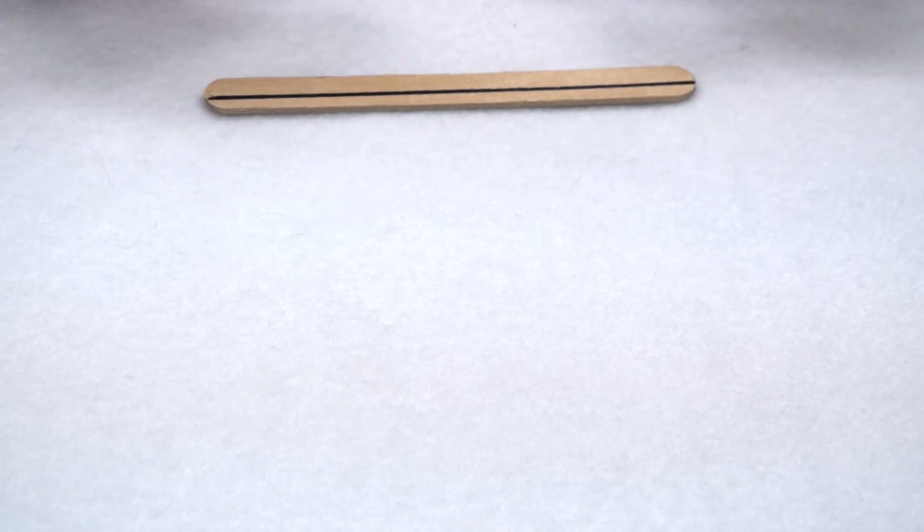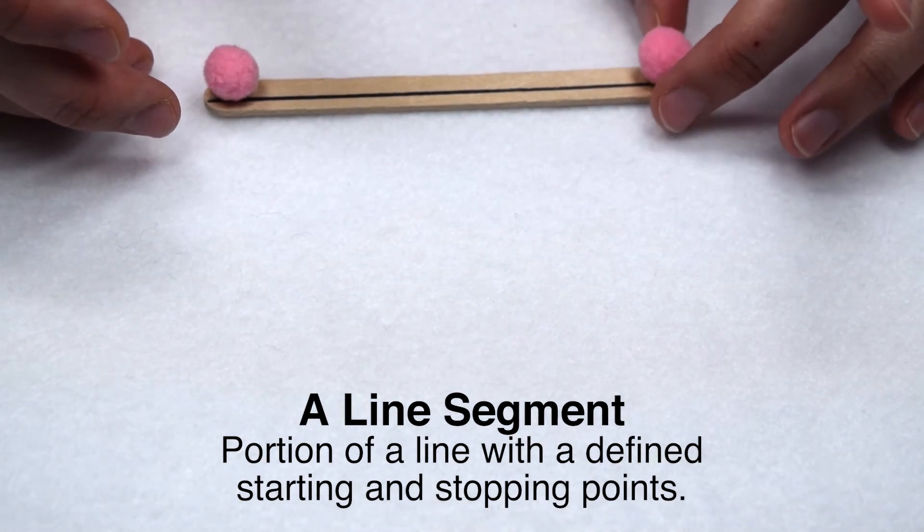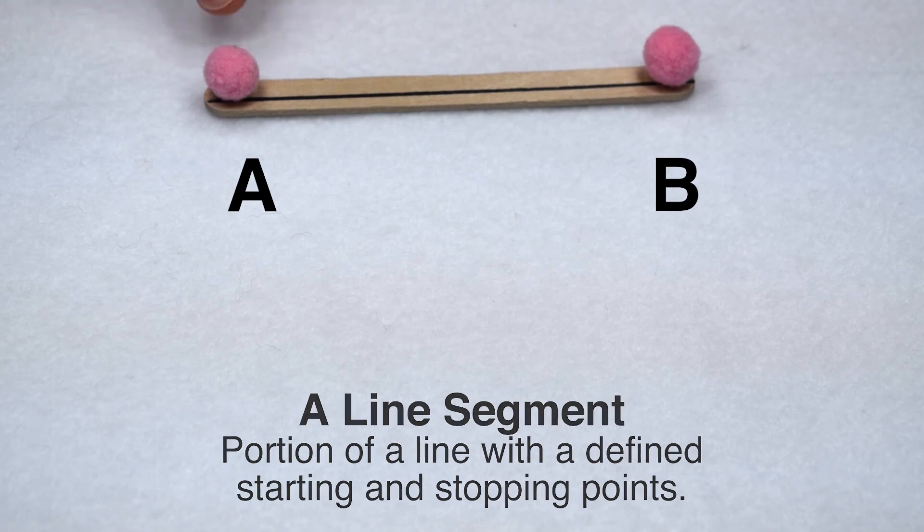But what if we don't want our line to go on for infinity? What if we want our line to have a defined starting point and a stopping point? Then we would have a line segment. A line segment is a portion of a line with a defined starting point and a defined stopping point. We could refer to this line segment now as line segment A, B.